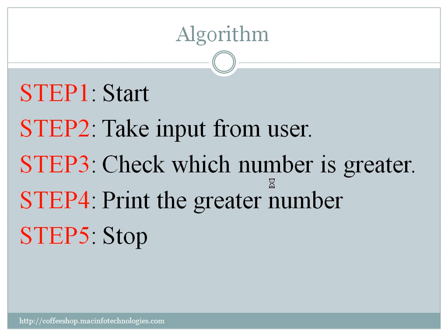You can also write an algorithm. An algorithm is more like English language — English sentences. These sentences will tell you what exactly is happening in every step. In the first step, we say start. In the second step, we take input from the user. Then the next step is to check which number is greater, and once the decision is made, we print the greater number and the program stops. This way we can write algorithms — simple steps of what exactly happens in the program, written in normal English.